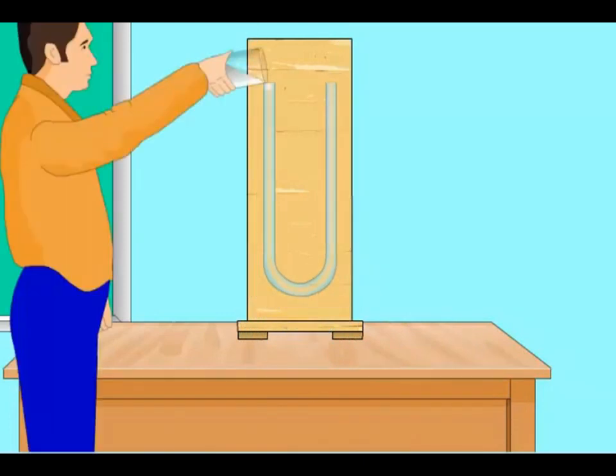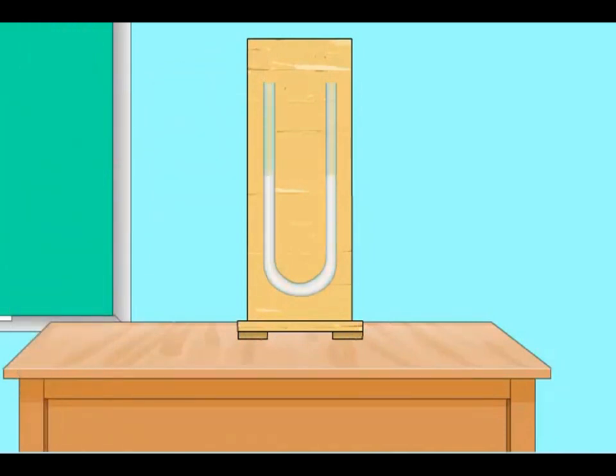Initially the U-tube is filled with the manometric fluid such that the level of the fluid is same in both the limbs. The manometric fluid in the U-tube can be oil, water or mercury whose density should be known.